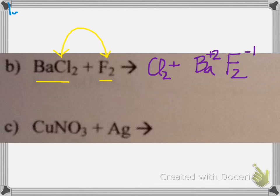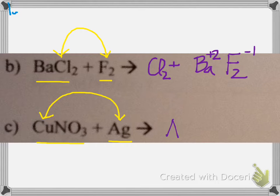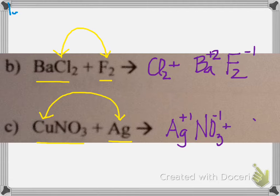The last practice problem one reaction: an element reacting with a compound — single replacement. Silver is a metal so it takes copper's place. Silver has only one possible charge: plus one. Its partner is nitrate with a charge of negative one, giving AgNO3. The other product is copper. This skeleton equation is also a balanced equation.